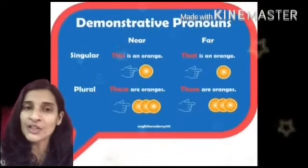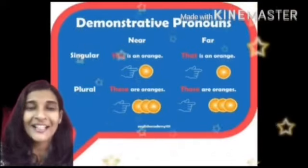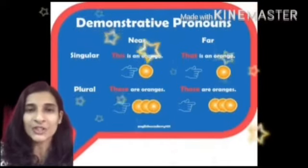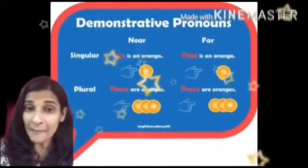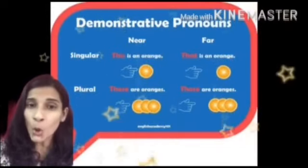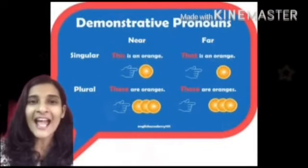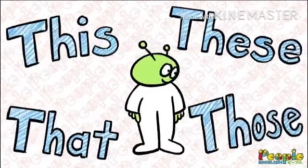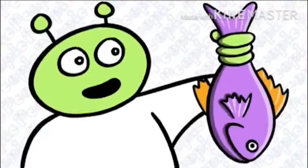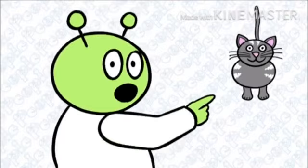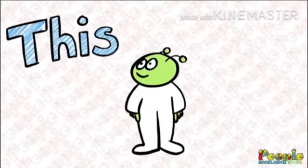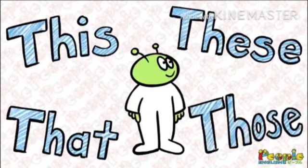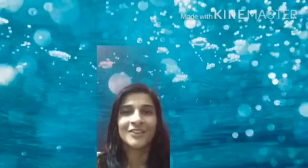Demonstrative pronouns are used to point out somebody or something. For example: this, that, these, and those.